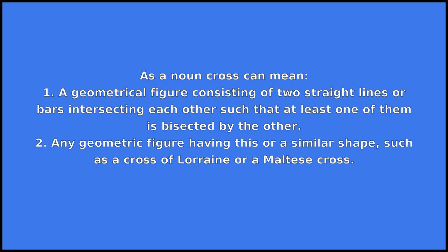As a noun, CROSS can mean: 1. A geometrical figure consisting of two straight lines or bars intersecting each other such that at least one of them is bisected by the other. 2. Any geometric figure having this or a similar shape, such as a cross of Lorraine or a Maltese cross.